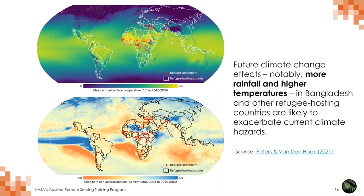Future climate change effects — more rainfall and higher temperatures in Bangladesh and other refugee-hosting countries — are going to make these challenges more acute, more severe, and more frequent. We see this with maps showing mean annual surface temperature increases and changes in annual precipitation by mid-century. These changes will play out differently in different contexts and will compound existing hazards and risks.